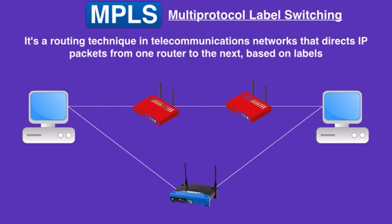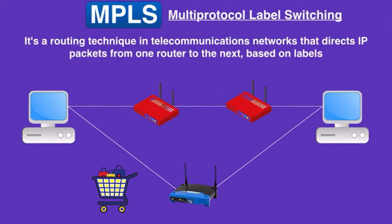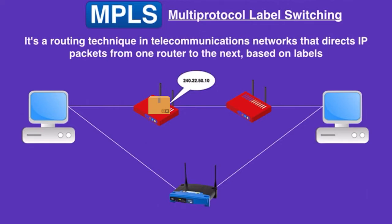Before we dive into its technical details, let me give you a quick rundown on how a traditional IP packet travels over the internet. Did you ever order something online from a distant retailer and then track the package as it makes strange and illogical stops all over the country? That's similar to the way an IP packet works on the internet. When a router receives an IP packet, it only carries the destination IP address — there is no instruction on how that packet should get to its destination.